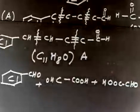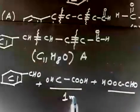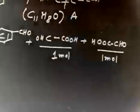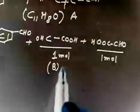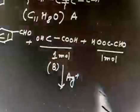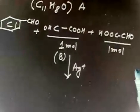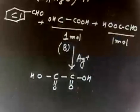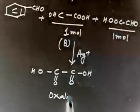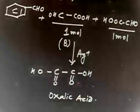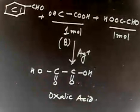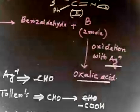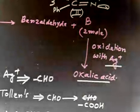From ozonolysis we get benzaldehyde on one side, and 2 moles of compound B which is OHC–CHO (glyoxal). Both moles of B are the same compound. When B is oxidized with Ag+ (Tollens reagent), both CHO groups are oxidized to COOH, giving COOH–COOH — that is oxalic acid, which matches the given information in the problem.